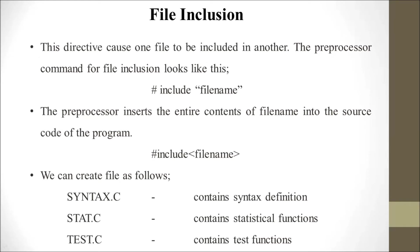File inclusion: this directive causes one file to be included in another. The preprocessor command for file inclusion looks like: #include filename, where filename can be stdio.h or conio.h.